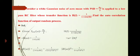Let us see the problem based on this. Consider a white Gaussian noise of zero mean with PSD equal to n0 by 2 is applied to a low pass RC filter whose transfer function is H of f equal to 1 by 1 plus i2 pi f RC. Find the autocorrelation function of output random process given Sx of omega equal to n0 by 2 and H of f equal to 1 by 1 plus i2 pi f RC.